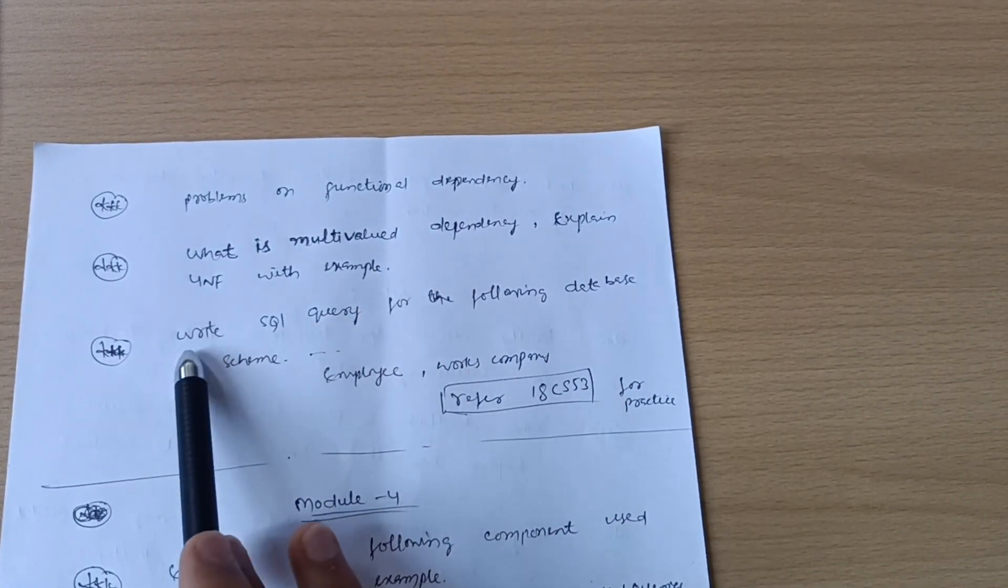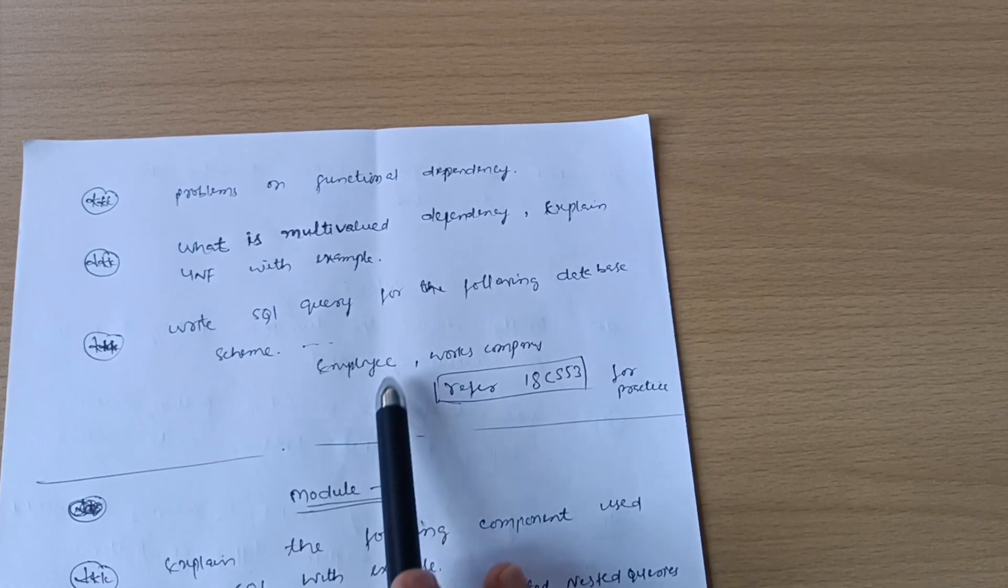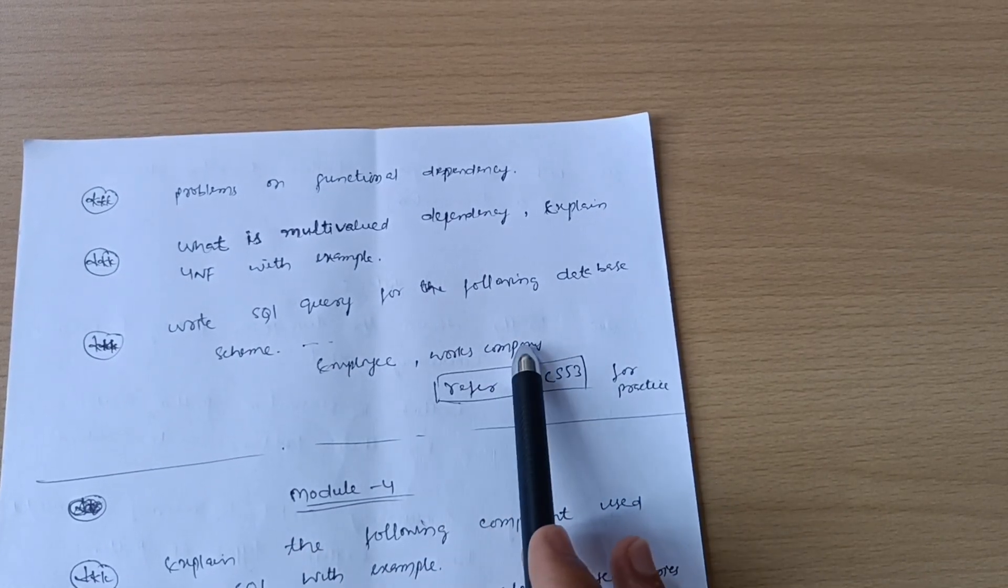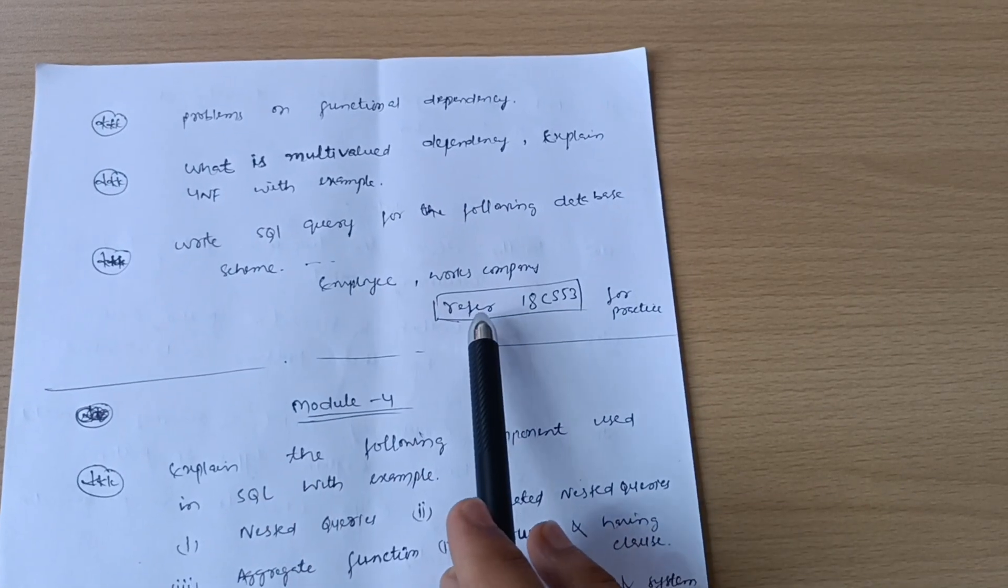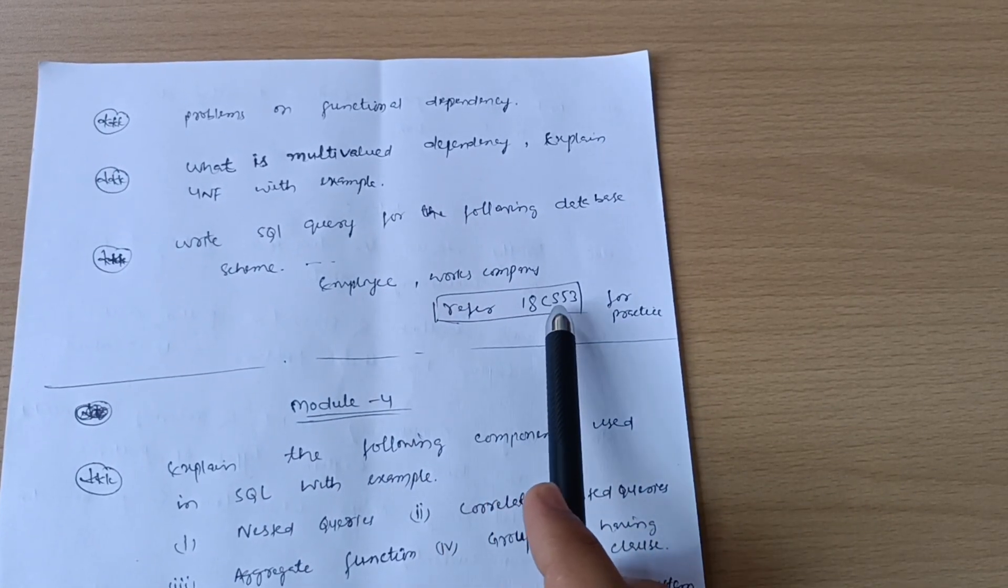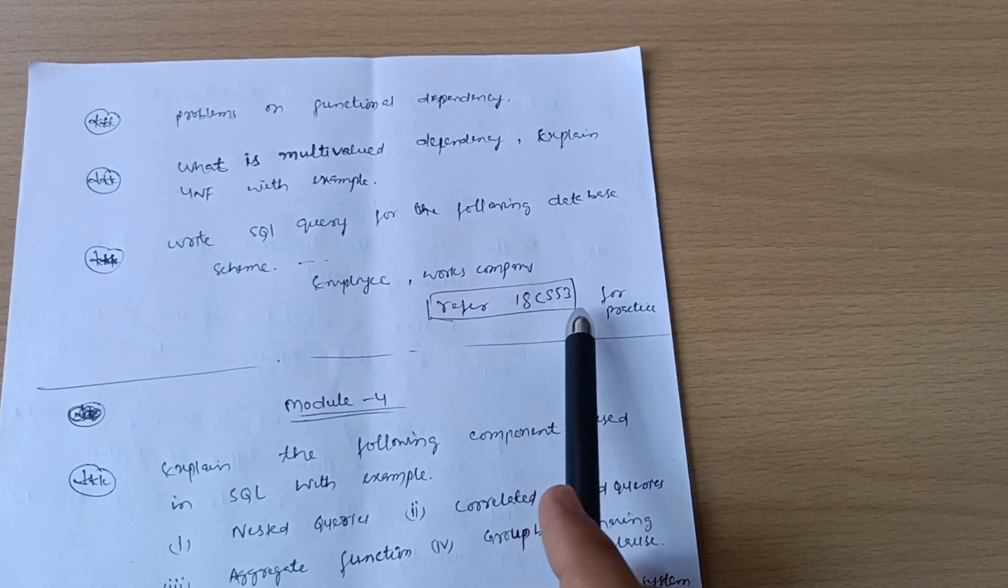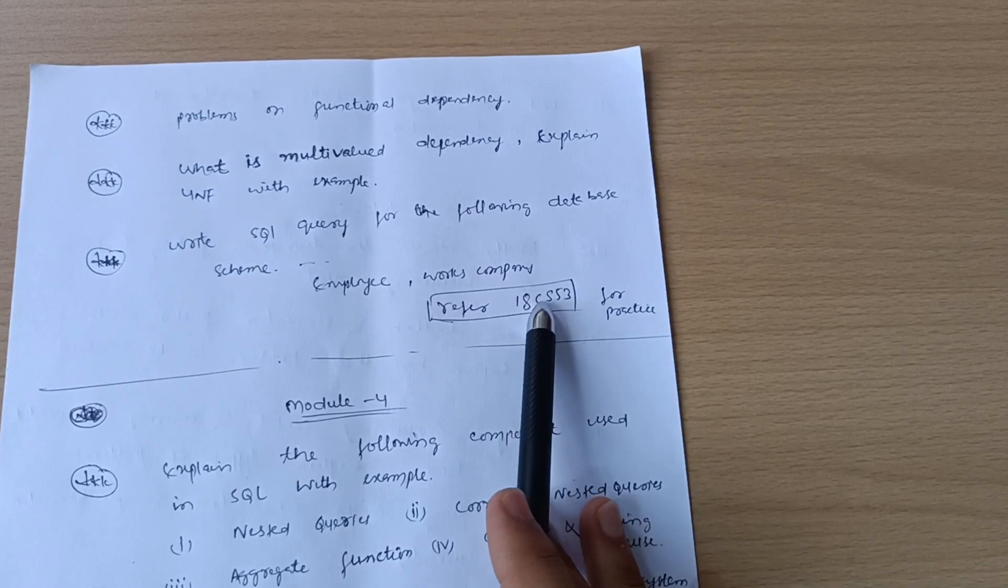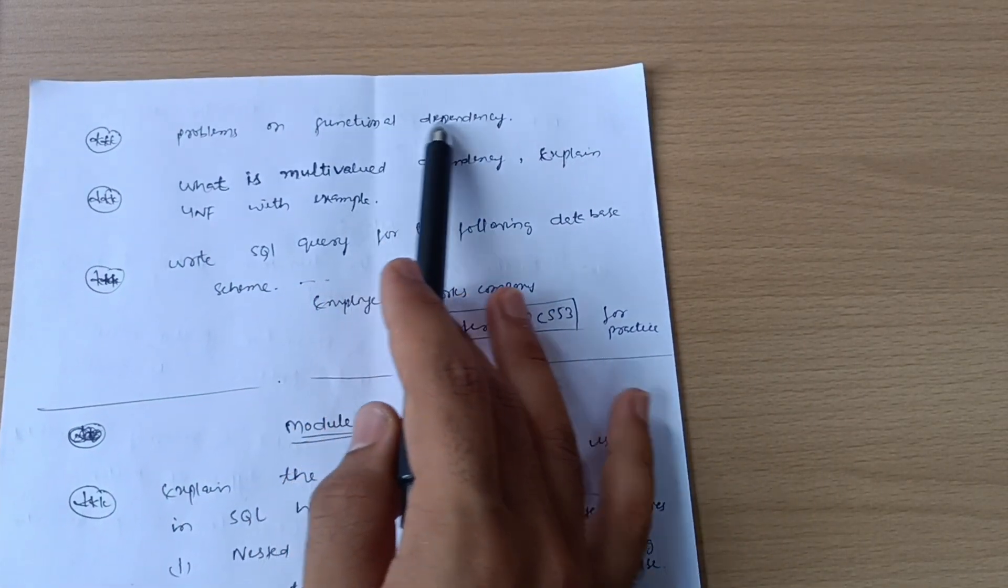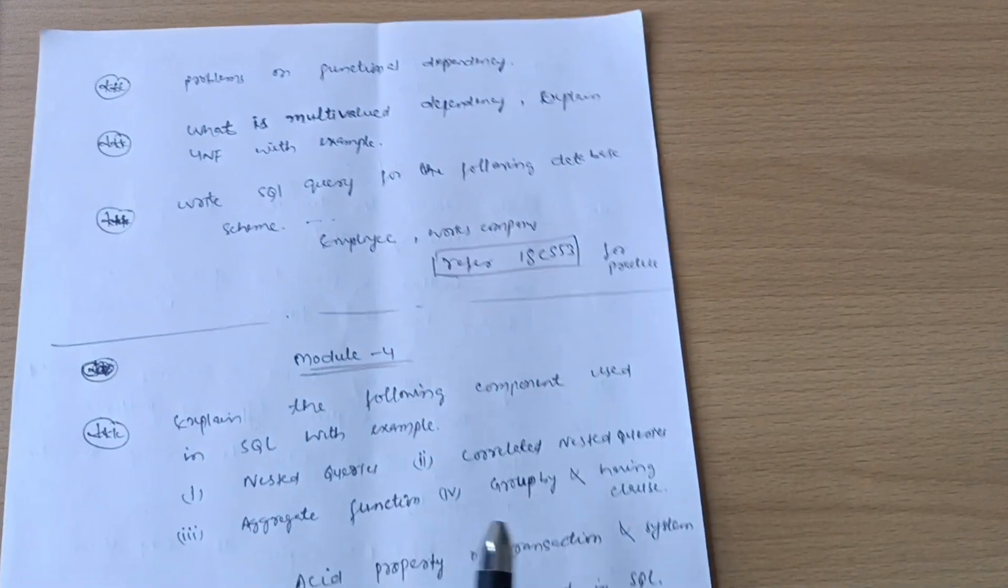Next Model 3 questions: What is multi-valued dependency and explain 4NF with example. Write SQL queries for the following - data will be given about database schemes like employee, company. You have to focus on the problematic part. Refer Paper 18CS53 for practice. If you're unable to get these papers, let me know in the comment section. Problems on functional dependency are most important - go through them and also refer the model question paper.